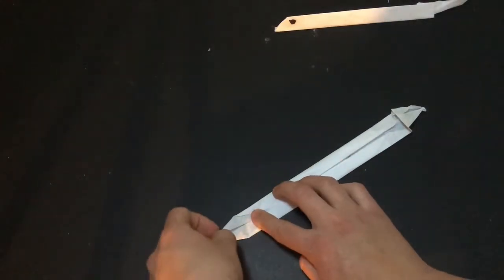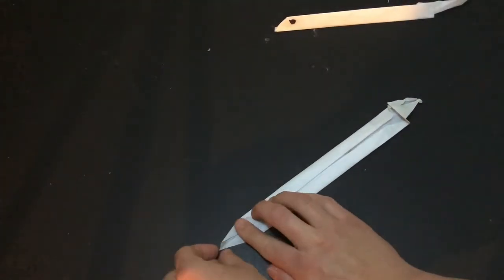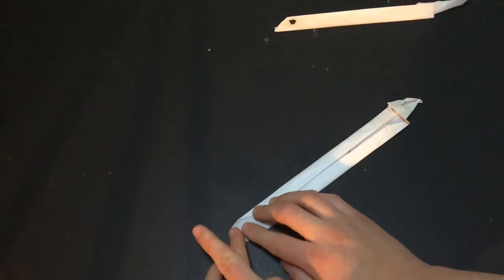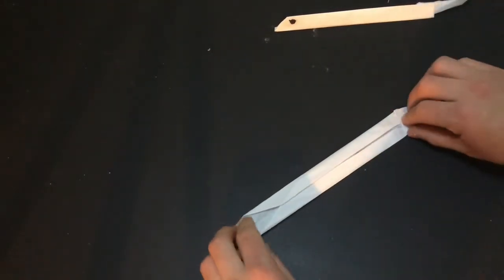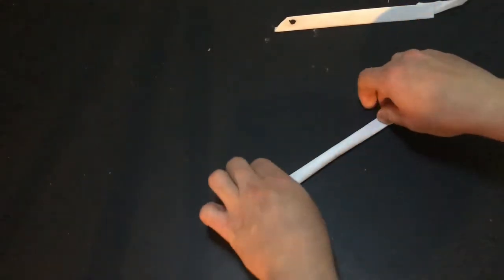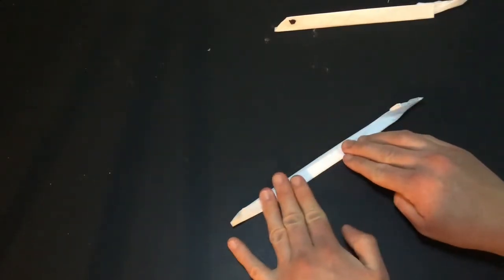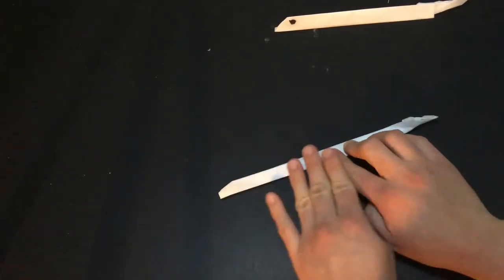And then for the head, what you're gonna want to do is just fold the front part in. So then instead of having a triangle that comes to a tip, that comes to a point, it's just kind of like this flat part. And then we're gonna fold that whole thing over.